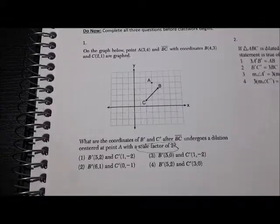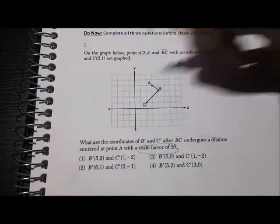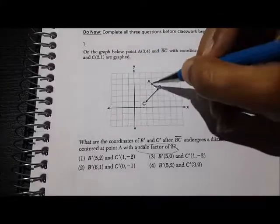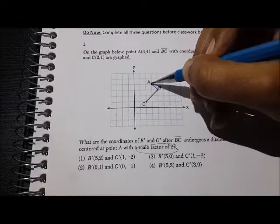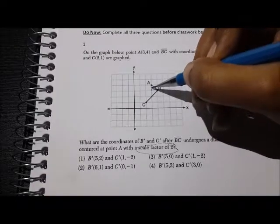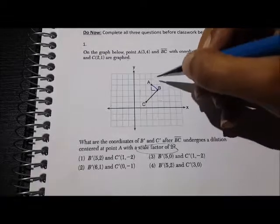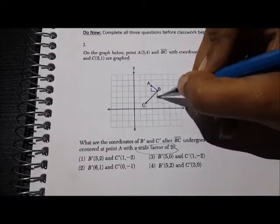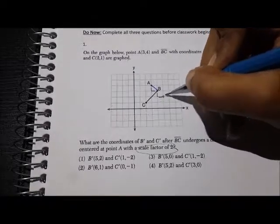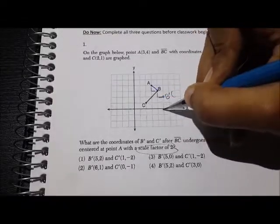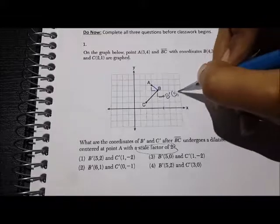If I look at this distance from A to B, in order to travel from A to B, I can go down 1 and to the right 2. Well, if I want to double that, I just do that one more time. So down 1 and to the right 2, and that'll get me my B' which is (5, 2).